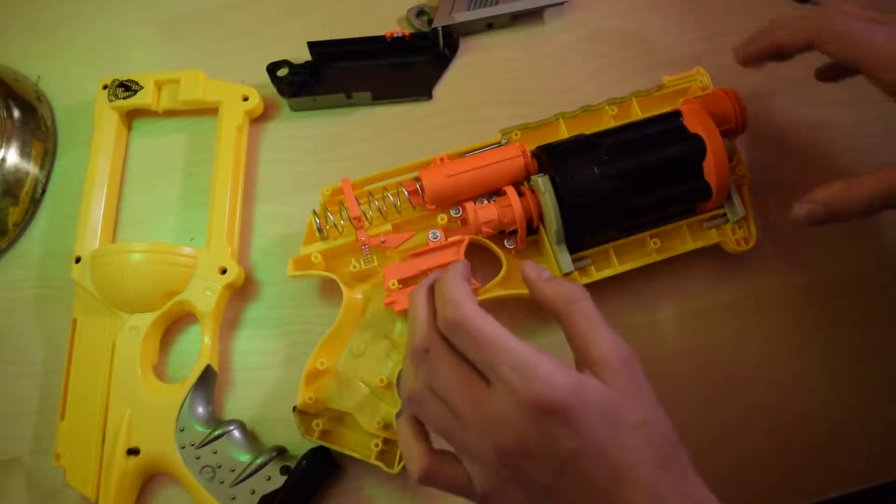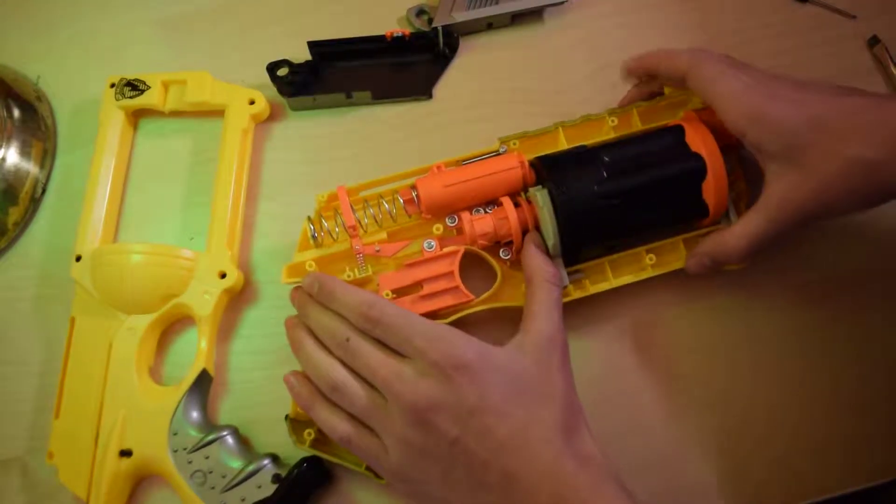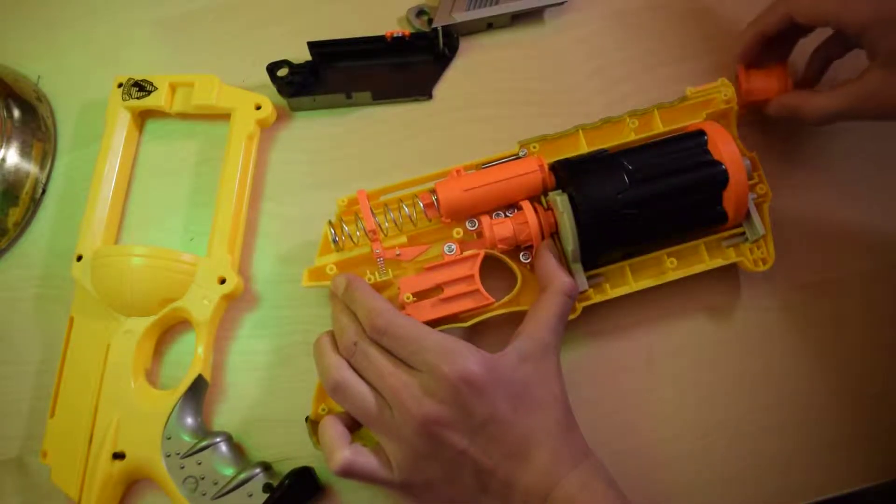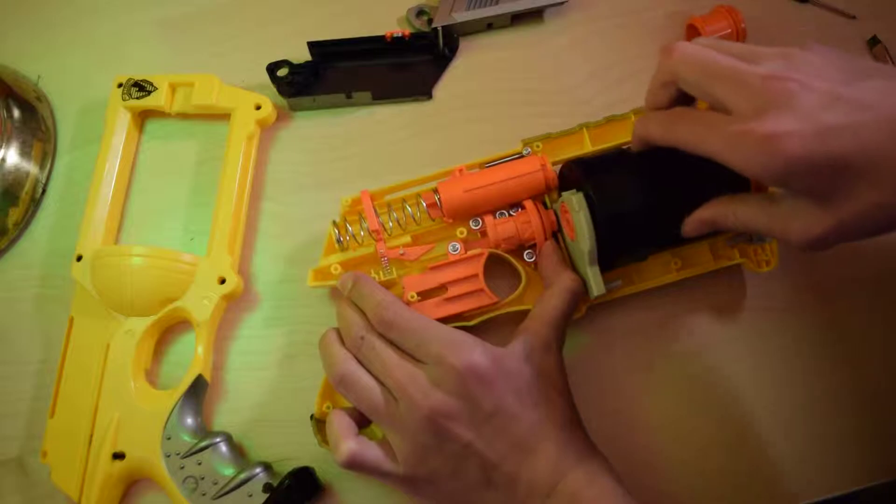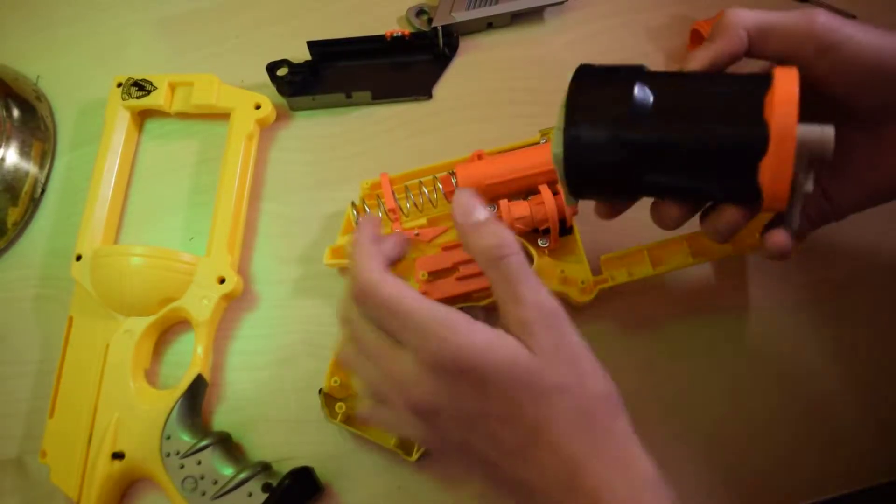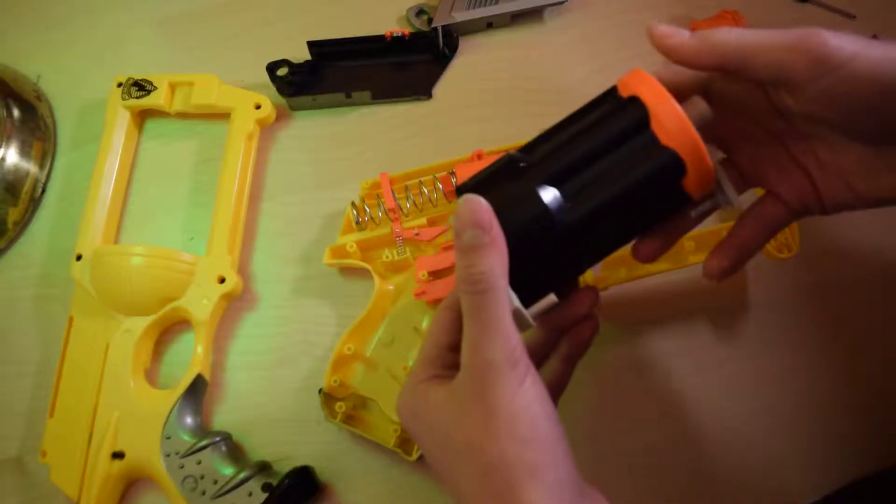First you're going to want to take out the cylinder system. So you can pull back on this little part here and lift the cylinder out. There may be a little bit of struggle, but you should be able to get it. There we are. Now we're just going to start work on this.